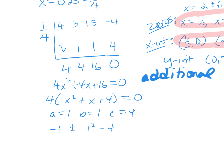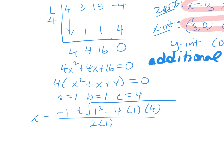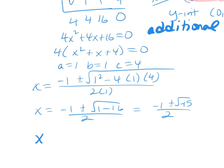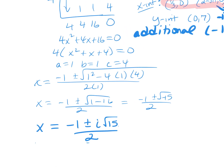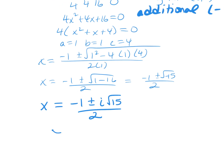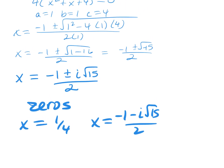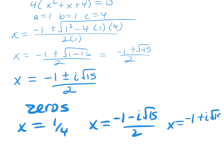Applying the quadratic formula: negative 1 plus or minus the square root of 1 squared minus 4 times a times c, all divided by 2 times a. This gives me 1 minus 16 under the radical. Notice when I subtract I get a negative number under the square root — this tells me my other two zeros are imaginary. That's why when I looked at the display on my calculator, I could only see it touch the x-axis one time. My zeros are x equals one fourth, x equals negative 1 minus i radical 15 over 2, and x equals negative 1 plus i radical 15 over 2.